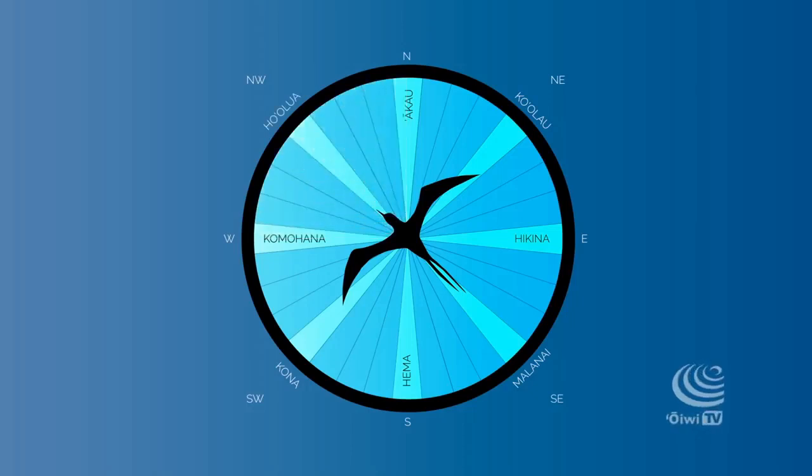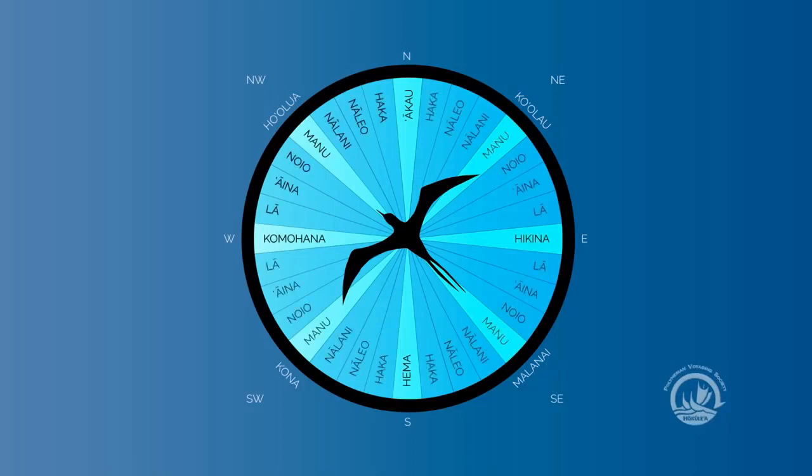There's seven star houses within each quadrant: Evila, Aina, Noyo, Manu, Nalani, Naleo, and Hakka. If you multiply that by the four, that's 28, plus the cardinal points. That's how you get to 32.